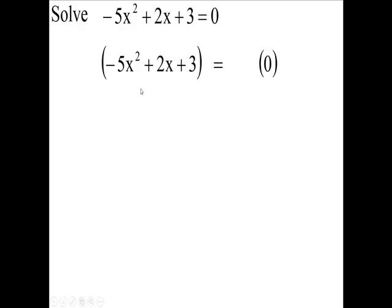First thing I want to do here is I want this to be a plus 5x squared. So I'm going to multiply both sides of my equation. I've copied my equation here. I'm going to put a negative 1 here and here.